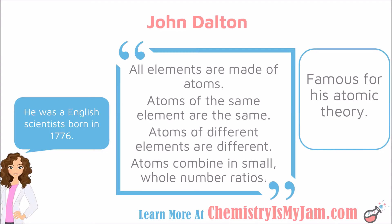John Dalton was an English scientist born in 1776, famous for his atomic theory. At this point, quite a few elements had been discovered, but not much was known about the details that made up the elements. Dalton said: all elements are made up of atoms; atoms of the same element are the same; atoms of different elements are different — so a gold atom is different from a silver atom. He also said that atoms combine in small whole number ratios. An example is water, H₂O — two hydrogen atoms for every one oxygen atom.